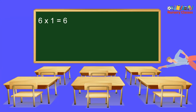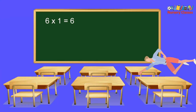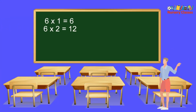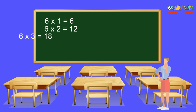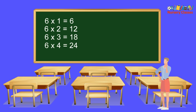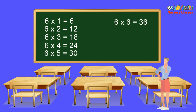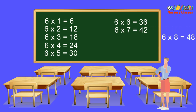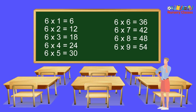6×1 equals 6, 6×2 equals 12, 6×3 equals 18, 6×4 equals 24, 6×5 equals 30, 6×6 equals 36, 6×7 equals 42, 6×8 equals 48, 6×9 equals 54, 6×10 equals 60.